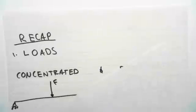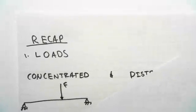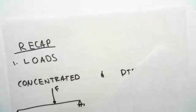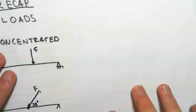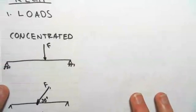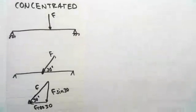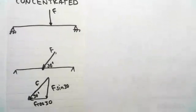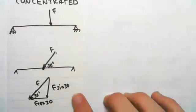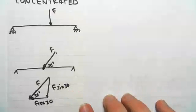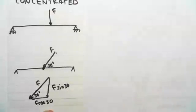So concentrated acts at a certain point, as you can see here, it's one force acting at a single point. So this could either be on an angle, so it could be like this, let's say at 30 degrees, and then we can break this up into our x and y components, as I have done here, the f sin 30 and f cos 30.